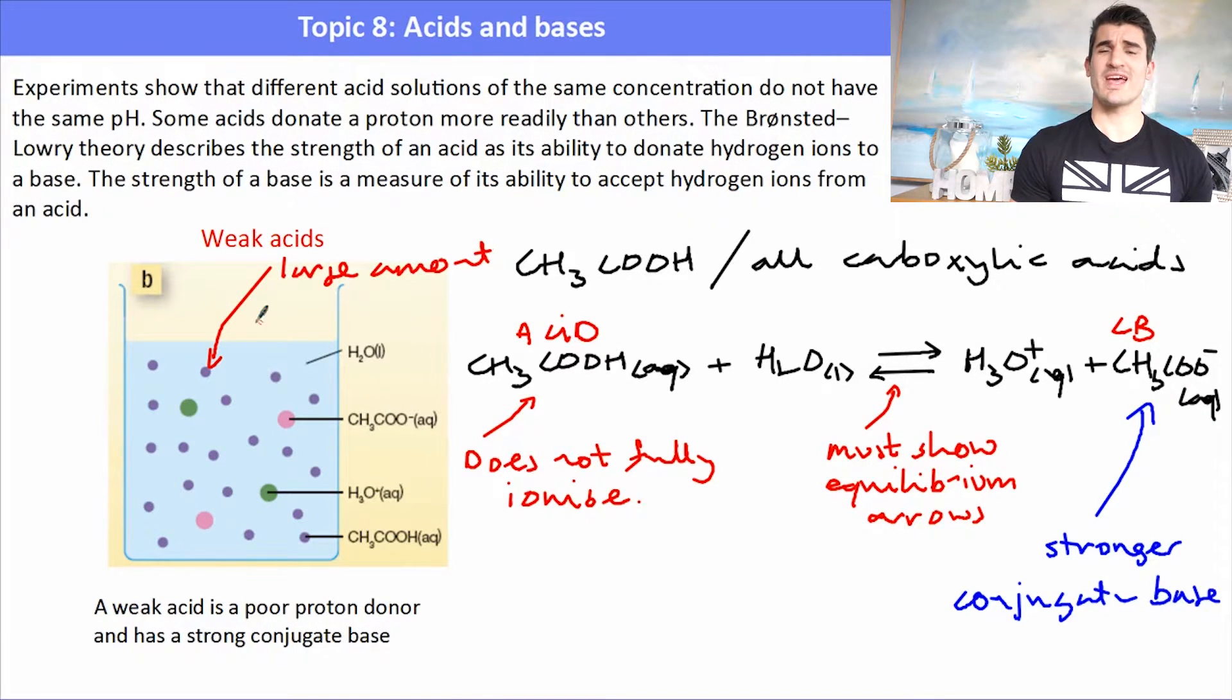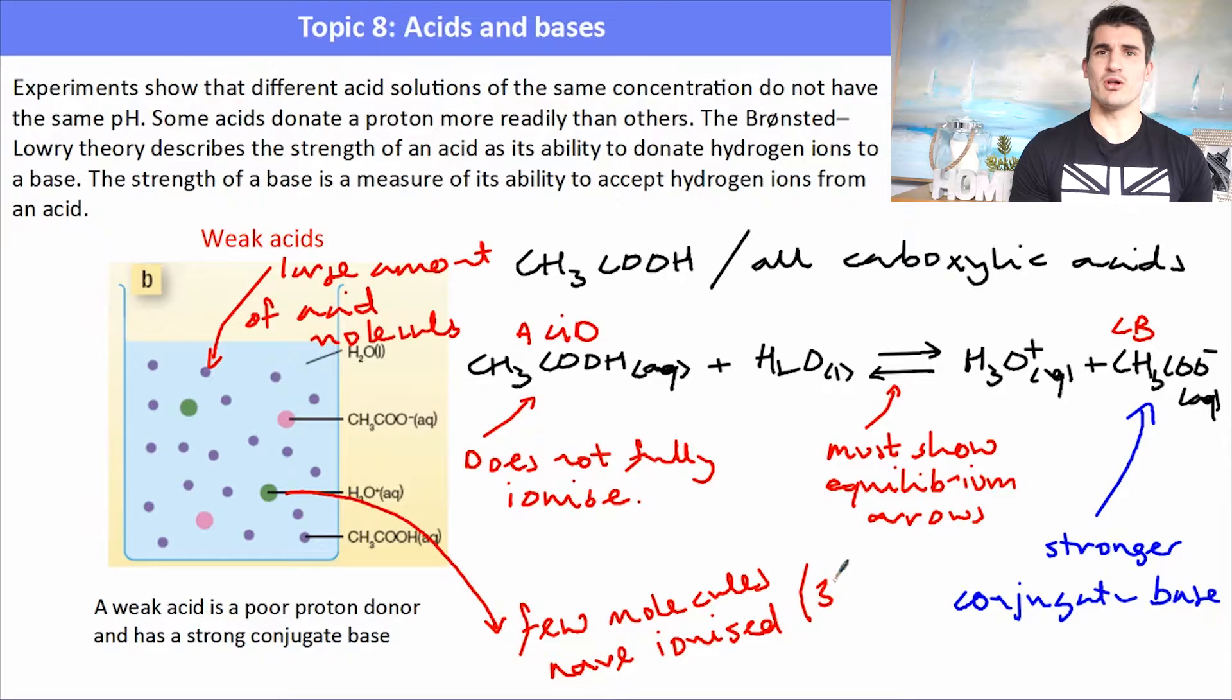In a solution of ethanoic acid we have a large amount of acid molecules. They are floating around, they haven't donated their protons. Only very few of them have actually donated their protons which is why we see very few H3O+ ions in the solution. For example, ethanoic acid ionizes to about three percent. So only about three percent of the molecules actually ionize. In terms of conductivity, because a weak acid does not form as many ions it will be a poorer conductor than a strong acid. It will still definitely conduct electricity but simply because it doesn't have as many ions in the solution it will have a lower conductivity and we could measure that by passing the electric current through the solution and measuring that conductivity.